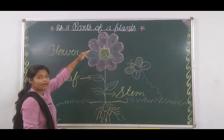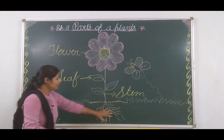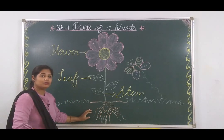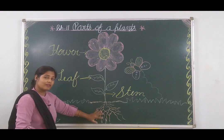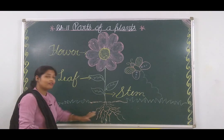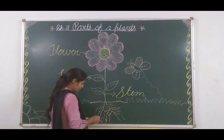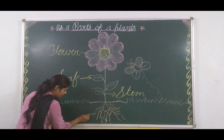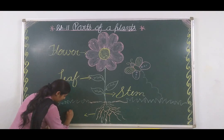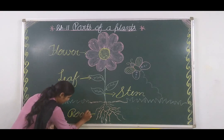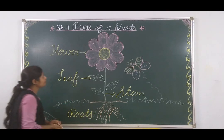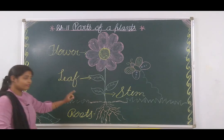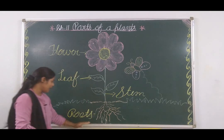This part goes from here up to the land. And down here, what do we call this part? Roots. Roots are below the land. The roots are connected to the whole ground. The spelling of roots is R, O, O, T, S. Roots. Flower, leaf, stem, and roots.